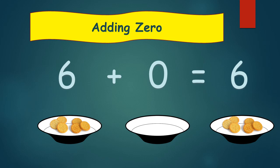Thus, it can be concluded that the sum of any number and 0 is the number itself.